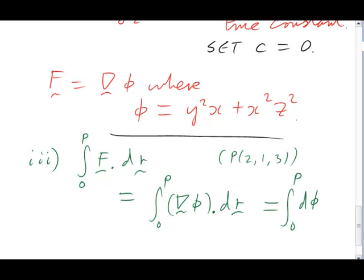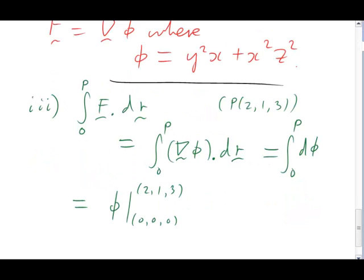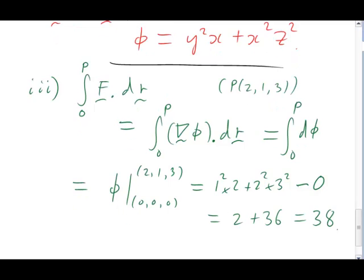But the integral of dphi is phi. We just need to put in the two endpoints, 0 and p. The rest is just arithmetic. Substitute the top point (2,1,3) and then subtract and substitute the lower point. But since that's the origin, that'll just be 0. The value is 38. But that's just by the way. The really important thing here is that this result was path independent. It doesn't matter what path we take from 0 to p, we'll always get the value 38 for the integral.